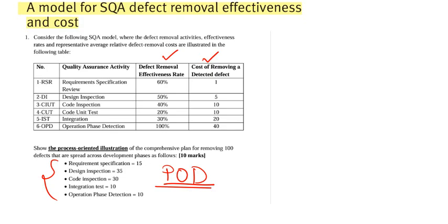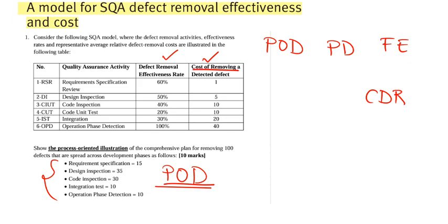At each stage we need to track five values: first, the phase originated defects; second, the past defects coming from the previous phase; third, the filter effectiveness; fourth, the cost of removing a detected defect; and finally, the total removal cost, which we can call TRC.